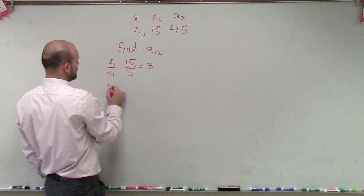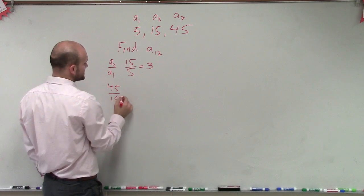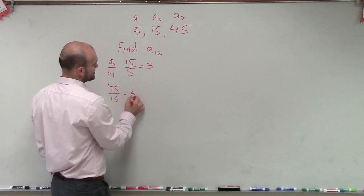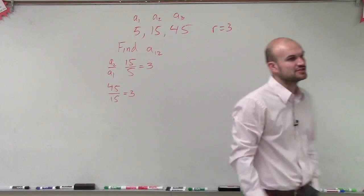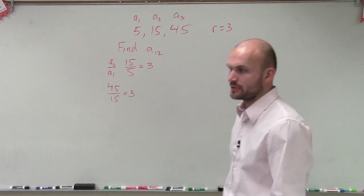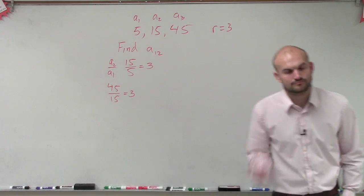Let's just double check, make sure 45 over 15 is going to give us the same ratio, which, yes, that's true, right? So we could say our ratio of this geometric sequence is going to be 3. Cool.